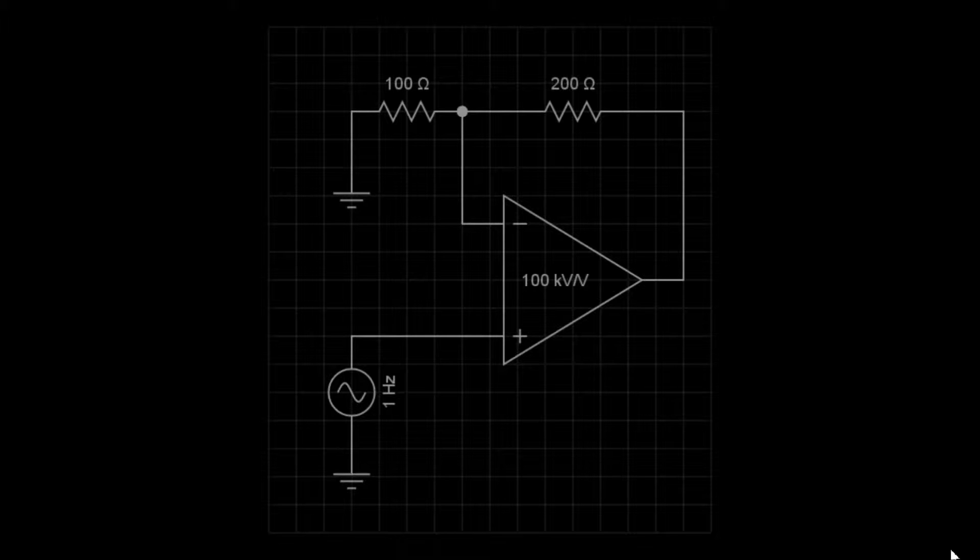This circuit shows the op-amp configured to create a non-inverting amplifier, meaning the output signal will be the same polarity as the input signal.